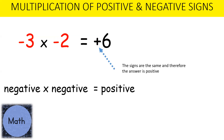Now let's look at this in a different example. Negative 3 multiplied by negative 2 gives us an answer of positive 6. The signs are the same, so therefore the answer is positive.